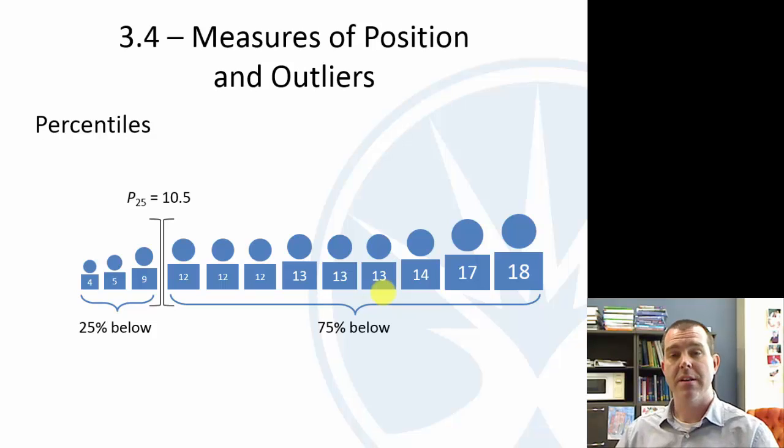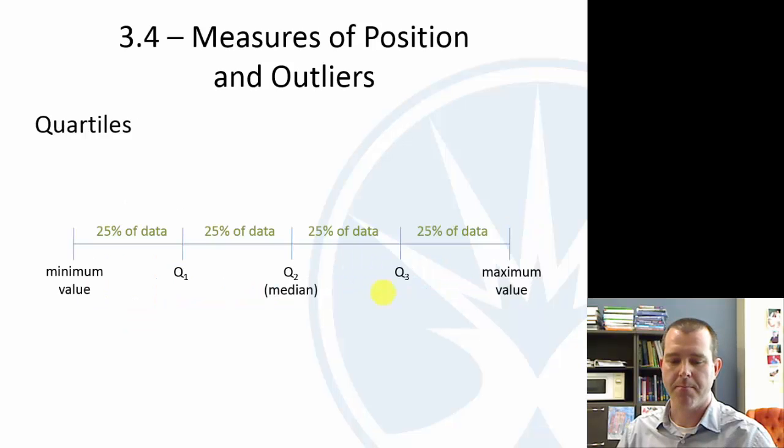All right, percentiles. So percentiles say, basically cutting it up into percents, but the percentile is the percent that are below. So P25, the 25th percentile, means 25% are below that particular observation. That's what percentile means. Quartiles, quarters, split the data up into quarters. So you have the first quartile has 25% below, the second quartile, which is the same as the median, has 50% below the third quartile, and then the maximum. So quartiles split the data up into quarters, essentially.